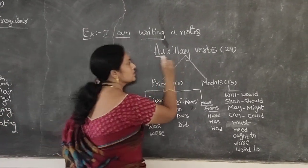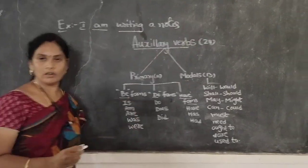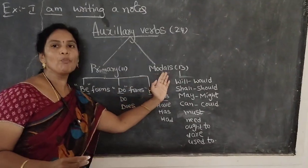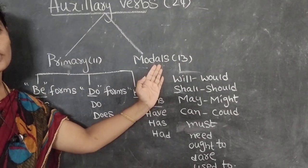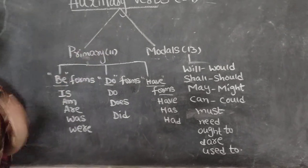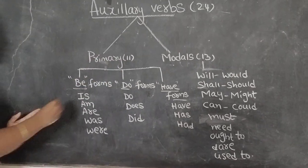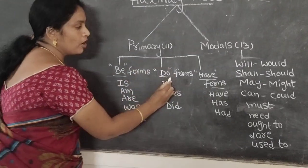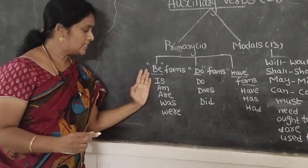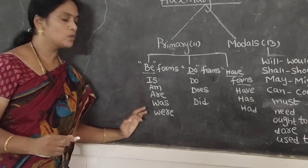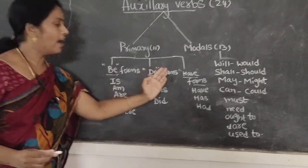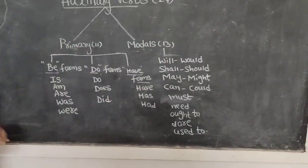Coming to the auxiliary verbs — we have 24 auxiliary verbs. Those are divided into primary verbs and modal auxiliaries. Primary verbs are 11. These 11 primary verbs are: be forms, do forms, and have forms. Be forms are: is, am, are, was, were, be, been, being. Do forms: do, does, did. Have forms: have, has, had.